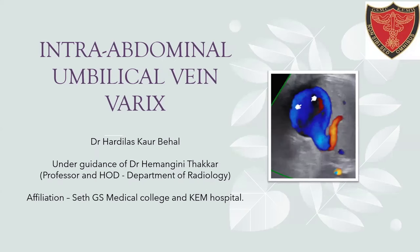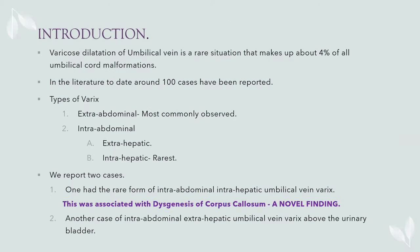Intra-abdominal umbilical vein varix. Varicose dilatation of the umbilical vein is a rare situation, making up about 4% of all umbilical cord malformations, and in the literature to date only around 100 cases have been reported. The types of varix have been classified according to location. The most commonly observed are the extra-abdominal type, the second type being intra-abdominal, of which intra-hepatic ones are the rarest.